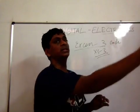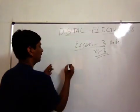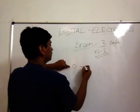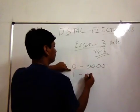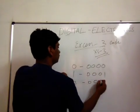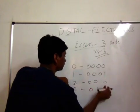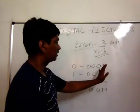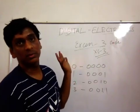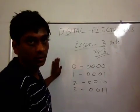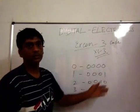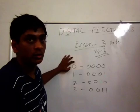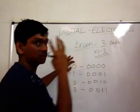As the name suggests, XS3 is nothing but three more than the actual code. For example, I'll write down the decimal number, binary number, and the XS3 code. For zero, normal binary is 0000; for one it is 0001; for two it is 0010; for three it is 0011. The XS3 code is three more than the actual binary code.